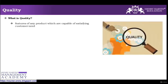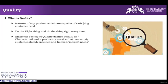Any features of any product which are capable of satisfying customer need — one very important thing is that our competitors are always looking for doing the right thing first time. Nobody wants to call again or do things repeatedly. Quality also talks about giving the customer right first time. The American Society of Quality (ASQ) defines quality as anything which can satisfy a customer's stated and unstated needs. It's not just what customers are saying — it's also what they are not saying, and we need to identify that as well.